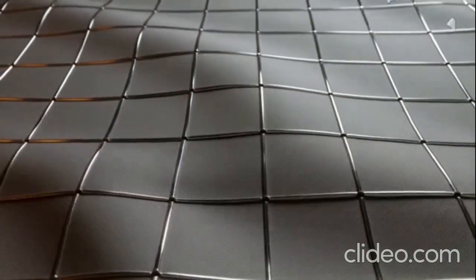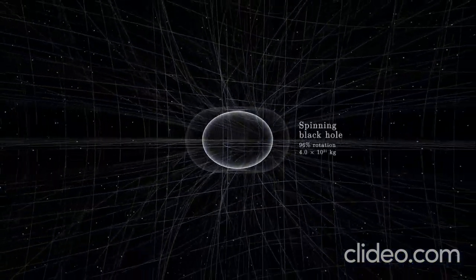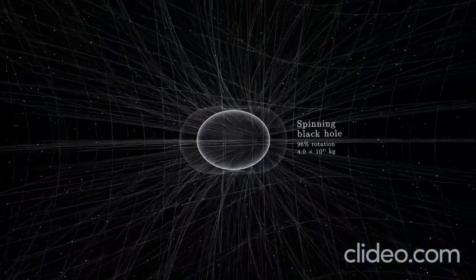From this you can see all forms of energy curve space-time. Now, one step further: add rotation. A fast spinning object doesn't just bend space-time, it also twists it.